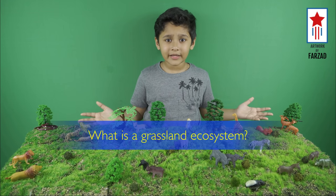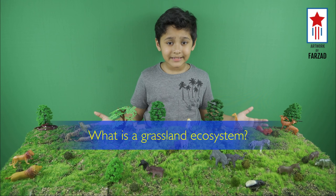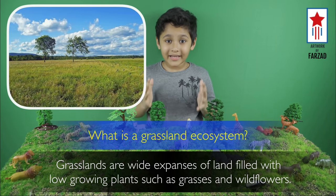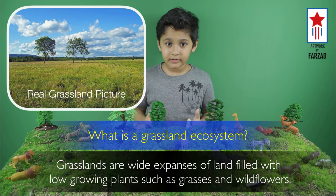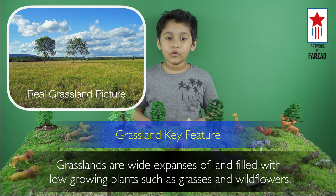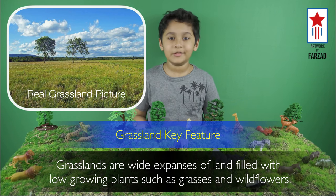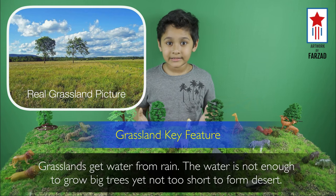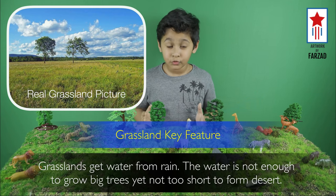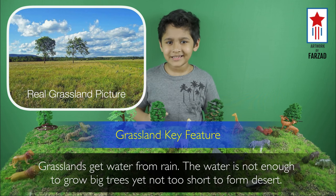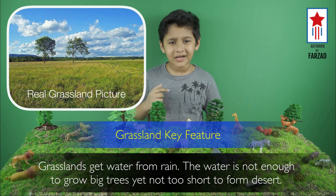Now, what is a grassland ecosystem? Grasslands are wide expanses of lands with low growing plants like grasses and wildflowers. The amount of rain in grassland is not enough to grow tall trees and produce a forest, but it is enough to not form a desert.